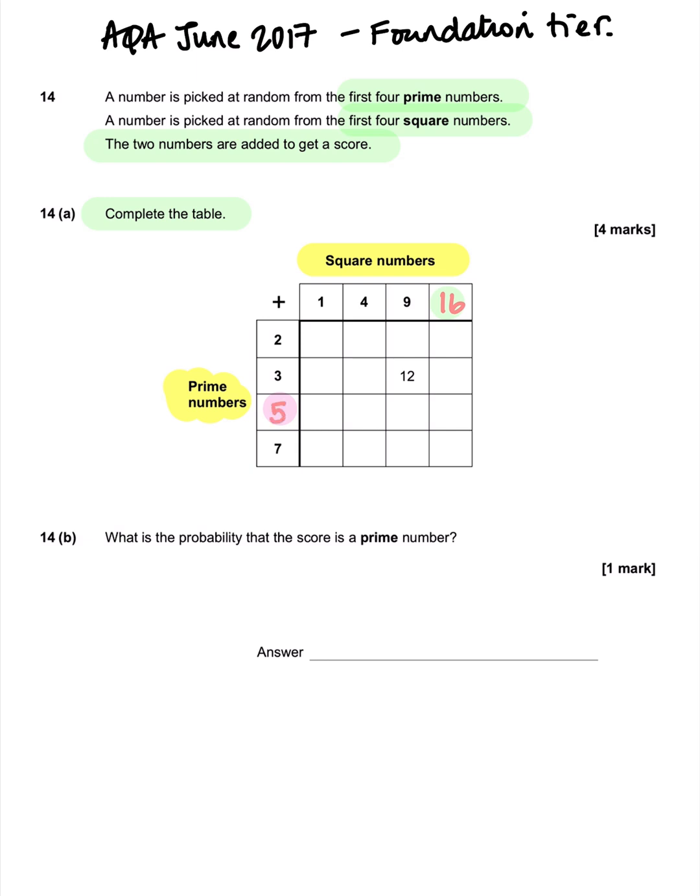So we pick a number at random and then we add them together to get the score. So 2 plus 1 is 3, 2 plus 4 is 6, 2 plus 9 is 11, 2 plus 16 is 18.